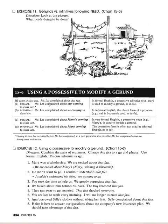Using a possessive to modify a gerund. Example: 'We came to class late — Mr. Lee complained about the fact.' Formal: 'Mr. Lee complained about our coming to class late.' Informal: 'Mr. Lee complained about us coming to class late.' In formal English, a possessive adjective ('our') is used to modify a gerund. In informal English, the object form of a pronoun is frequently used.